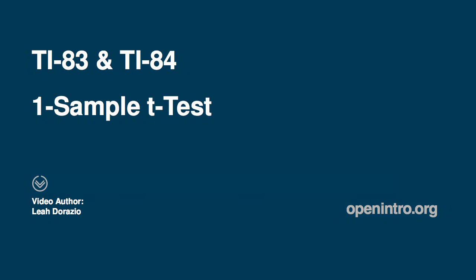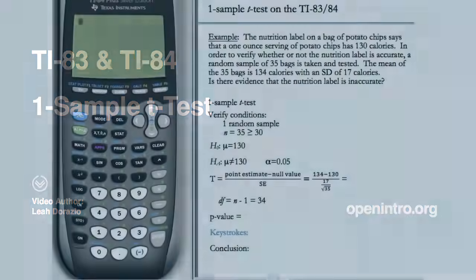In this video, we'll see how to carry out a one-sample t-test and find the t-statistic and p-value on the TI. The instructions for the 83 and 84 are identical for this test.